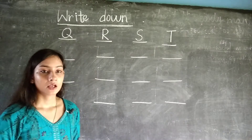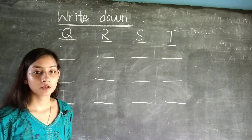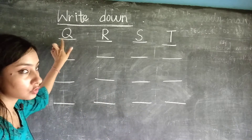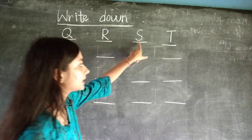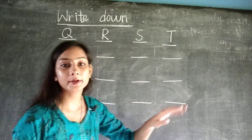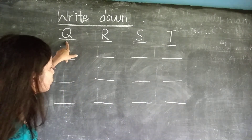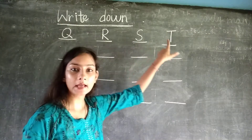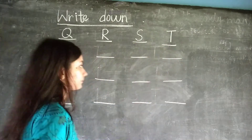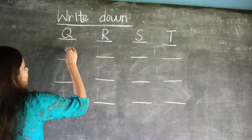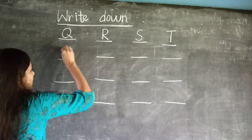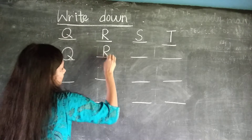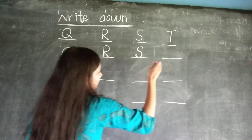Good morning nursery. Here I am with revision for you. You are going to write Q, R, S, T — all in capital. Capital Q, capital R, capital S, capital T. See, you will write like this: Q, R, S, T.